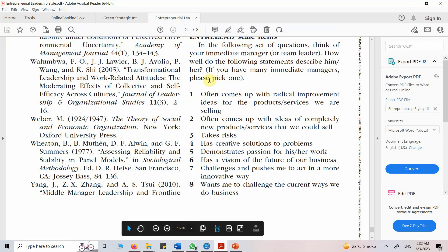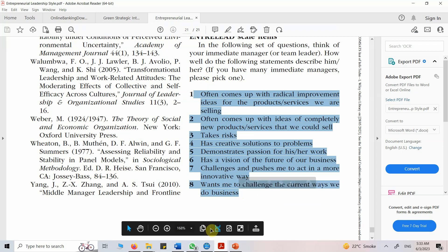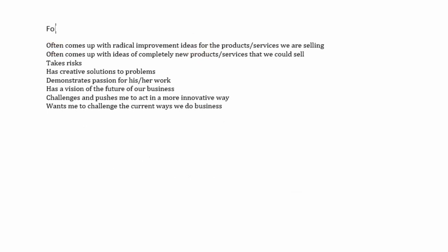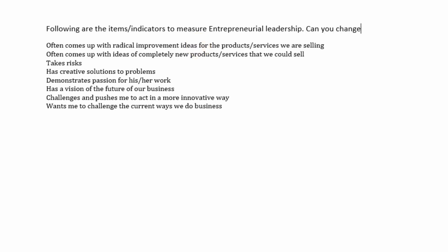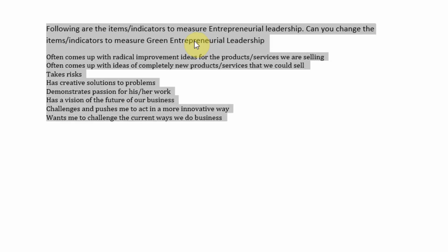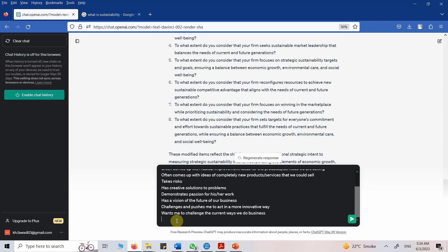So this is how you can use ChatGPT to adapt a questionnaire. Let me do another example — entrepreneurial leadership. I'll copy these statements and first design my prompt in a Word document. Following are the items or indicators to measure entrepreneurial leadership. Can you change the items to measure green entrepreneurial leadership — entrepreneurial leadership with a green intention? Let's see what we get. I'll copy and paste it and press enter.